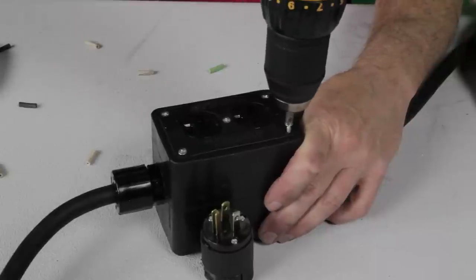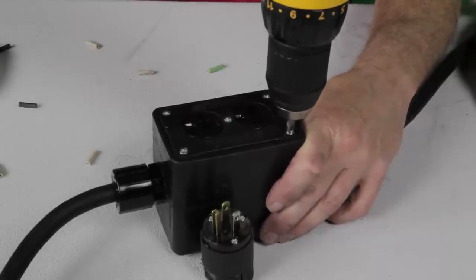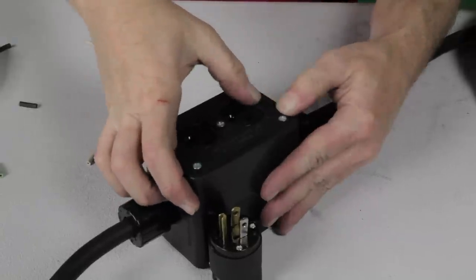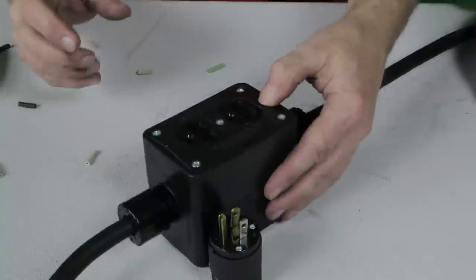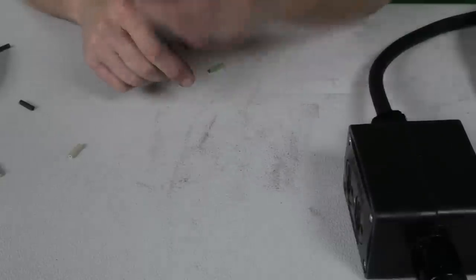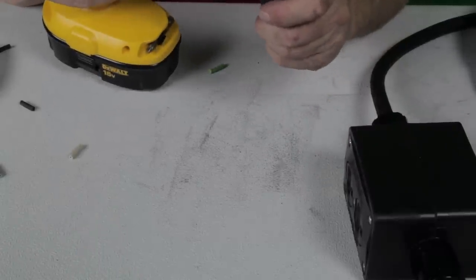OK, we've got the last screw here going in. And shoved that little rubber guy down. And we are done with all one, two, three, four boxes. So now the last thing we're going to do is take a look at showing you how to terminate this guy here, this little Edison plug.